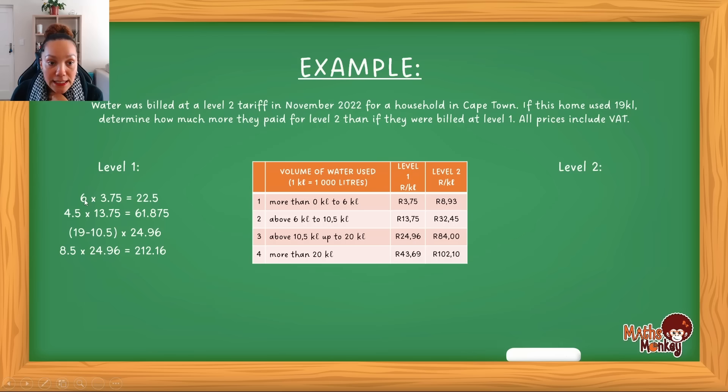And then how much do we have in total? We then have 6 plus the 4.5 gives us the 10.5. And so the first six was charged at that amount. The next 4.5 was charged at this amount. And the next 8.5 was then charged at this value, which means the total. So do you notice that more than 20, this tariff is not going to be relevant to our question because we're only working with the 19 kiloliters. So then our total then would be the first six, the next 4.5, and then the next 8.5. Which will give you 296.535.